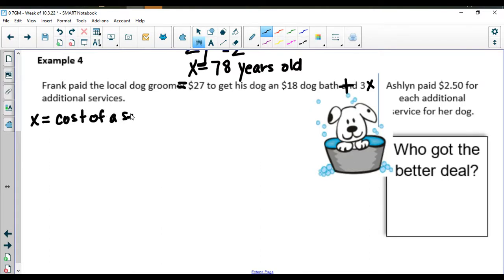We're going to call that X and X is going to represent the cost of a service. That's an additional service here. So we have our $18 dog bath plus the three times the cost of the service is equal to Frank's total of $27.